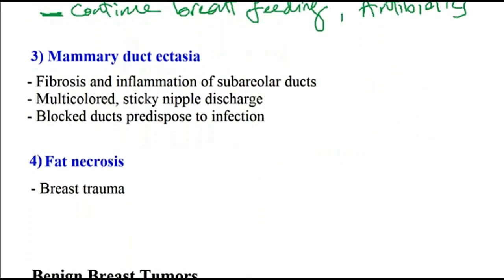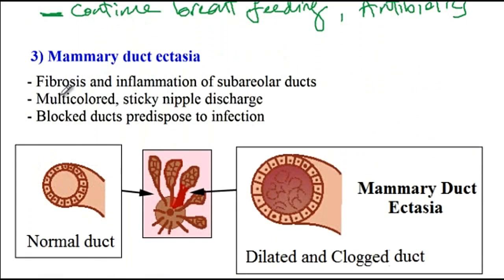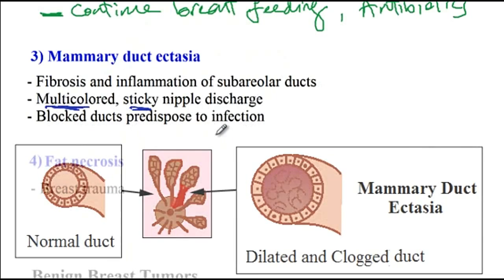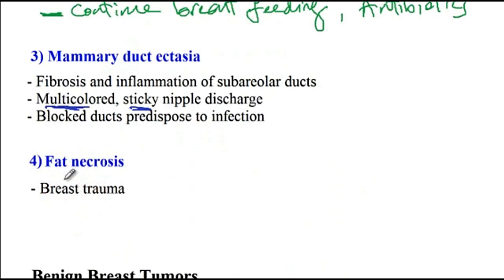The next condition is mammary duct ectasia, where there is fibrosis and inflammation of the subareolar ducts, presenting with multicolored and sticky nipple discharge. Due to blockage of ducts, these patients are predisposed to infections. Next, fat necrosis develops from breast trauma — it could be from a direct blow or from a seat belt.